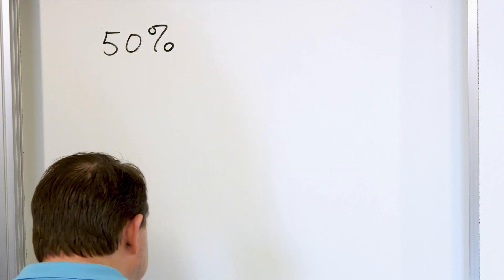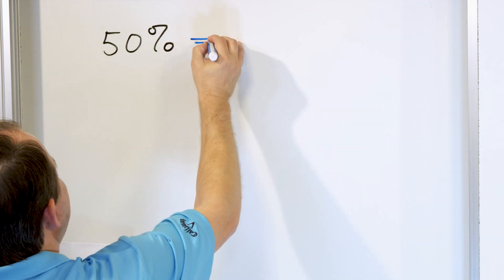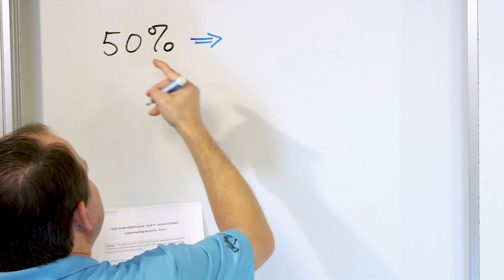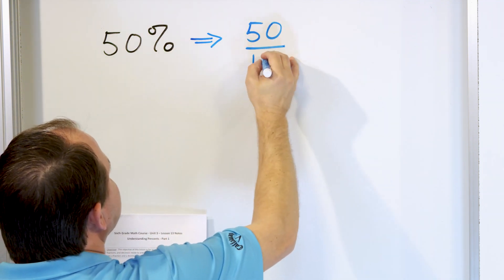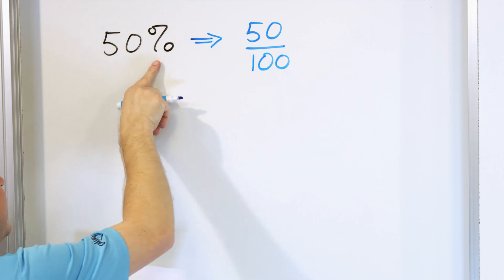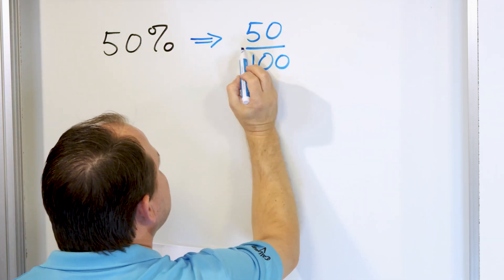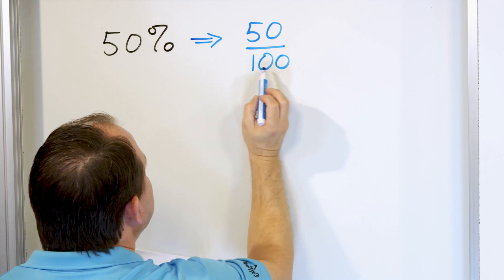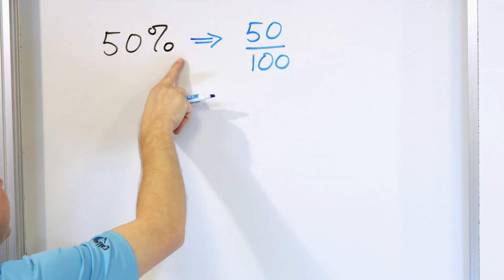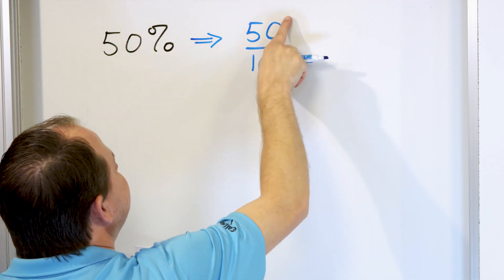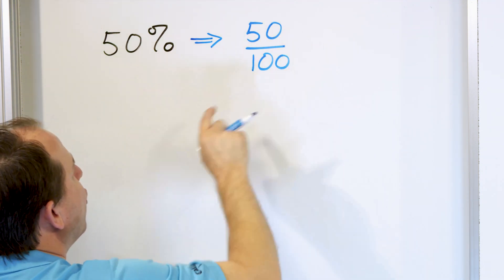What does a percent actually mean? Fifty percent actually means that it's 50 as it compares to 100. Because remember, percent — this symbol means per 100. So 50 per, the line, and 100 is down here. So this symbol means per 100, which means exactly the same thing as 50 divided by 100, or 50 over 100 as a fraction.